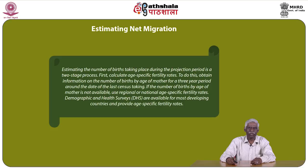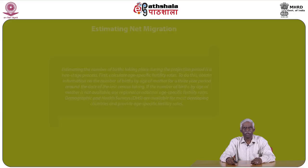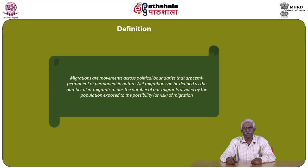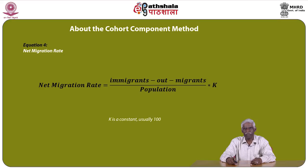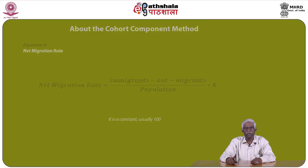Estimating net migration: the last part of the projection accounts for population movements in and out of the projection area. Two methods of estimating net migrants will be introduced, both relying on survival rates and census information. Migrations are movements across political boundaries that are semi-permanent or permanent in nature. Net migration is defined as the number of in-migrants minus out-migrants divided by the population exposed to the risk of migration. The net migration rate equals (in-migrants minus out-migrants) divided by population, multiplied by constant k, usually 100.